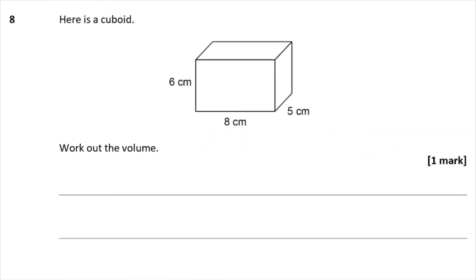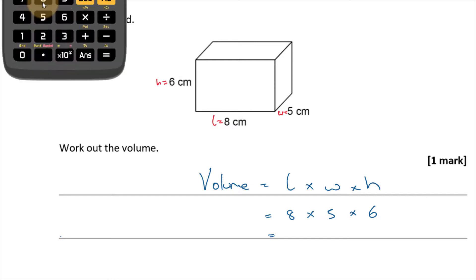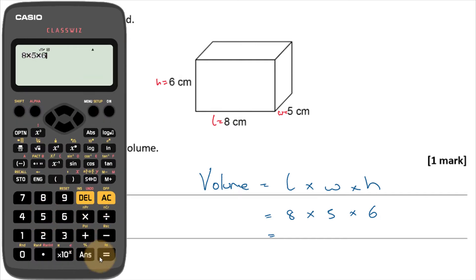Question 8: Here is a cuboid. Work out the volume. The formula is volume = length × width × height. Multiplying 8 × 5 × 6: first 5 × 6 = 30, then 8 × 30 = 240. So the volume is 240 cm³.